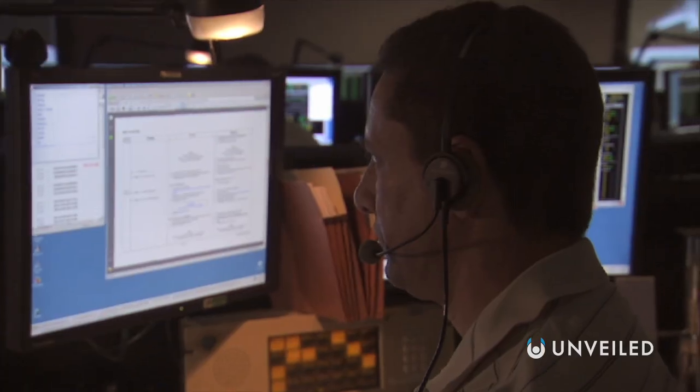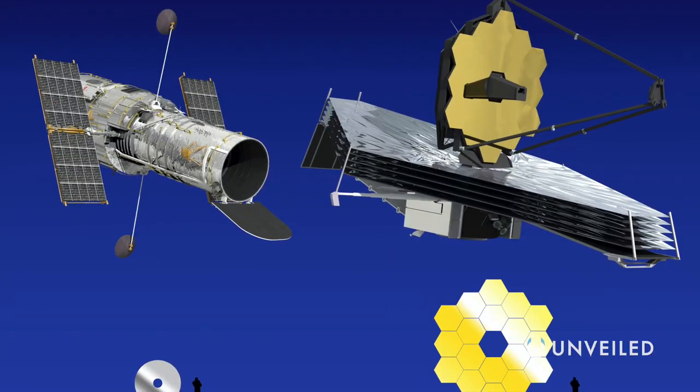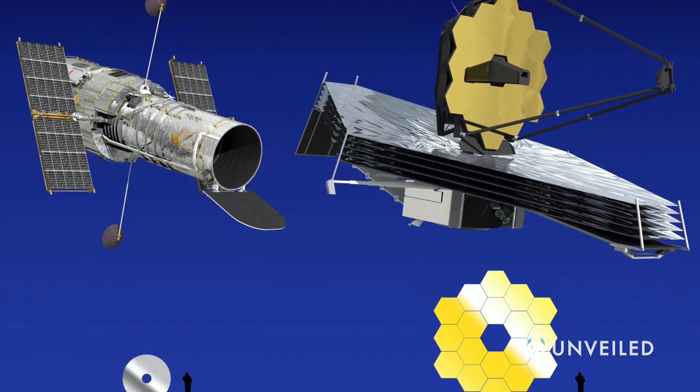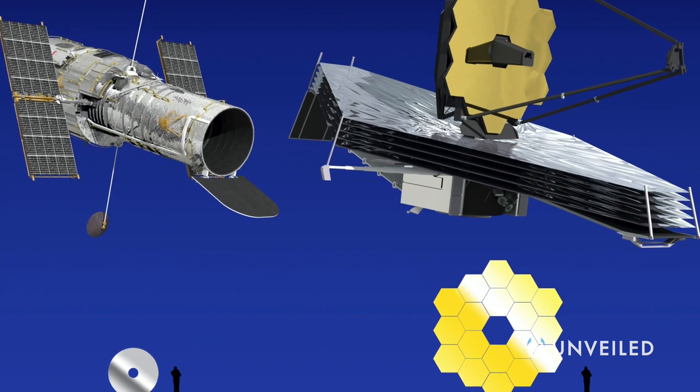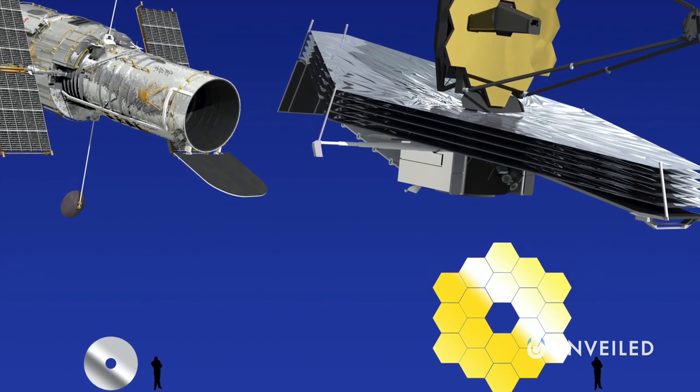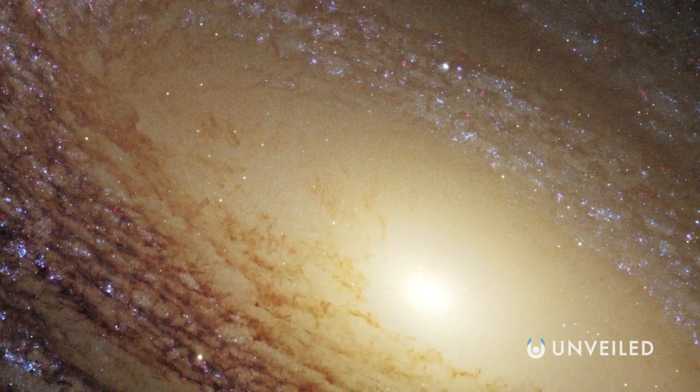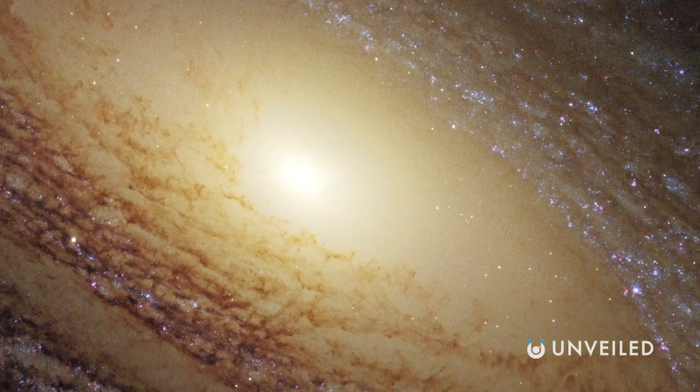On board Webb, there will be all manner of cutting-edge technology. Although the vehicle itself will weigh roughly half of what Hubble does, its primary mirror, a spectacular-looking golden structure of eighteen interconnected smaller mirrors, will fan out to more than five times the size of Hubble's. This will allow it to literally see more of space than ever before.